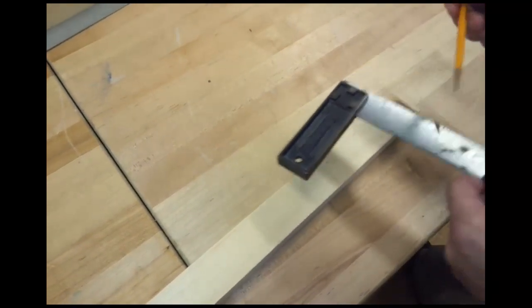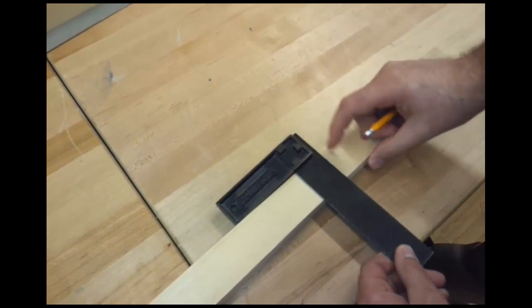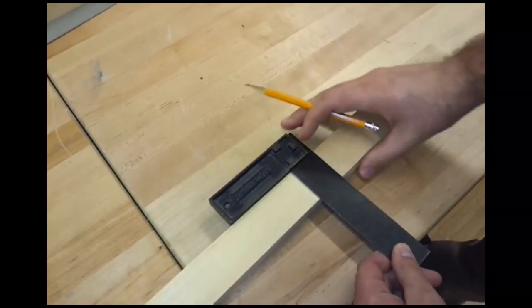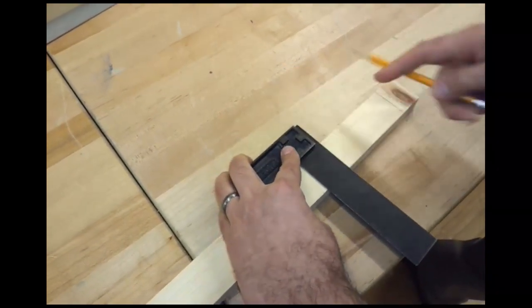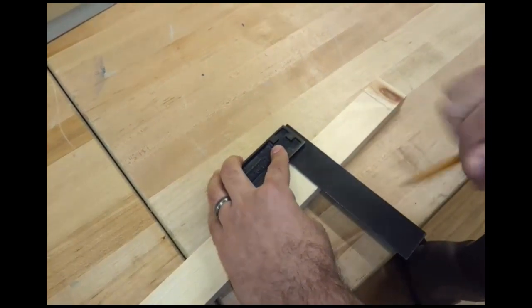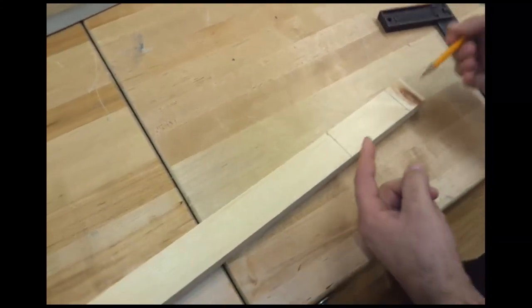I'll now take my square again, line it up with that mark that I put on there, hold the square tight to the board and make another line. Once you've done that, you have a four-inch line.